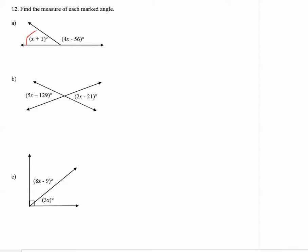Since these two adjacent angles make a straight line together, they are supplementary and their measures together should be 180 degrees. So we set up an equation adding the angles together. X plus 1 plus 4x minus 56 equals 180.